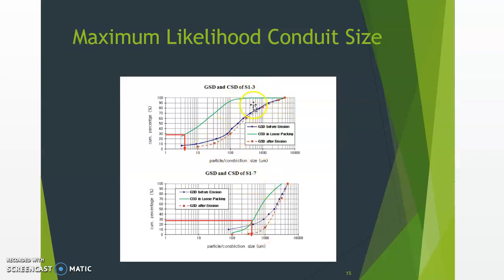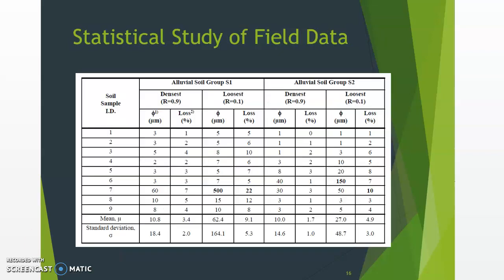Based on the grain size distribution data for sample 3 and sample 7, we calculate the constriction size (shown as the green line) where 28% corresponds to the critical criteria. After piping, the erodible soil has a different grain size distribution. For sample 7, about 20% of the pipe particles are eroded, and the remaining soil's grain size distribution skeleton is hugely different from the original grain size distribution curve.